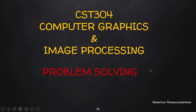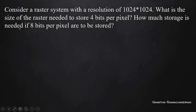Welcome back everyone. In this video, we have screen resolution related problems. The first question: consider a raster system with a resolution of 1024 by 1024. What is the size of the raster needed to store 4 bits per pixel? And the second part: how much storage is needed if 8 bits per pixel are to be stored?